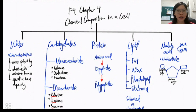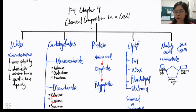Hello everyone, I'm Koyen and today we are going to learn the chemical composition in a cell, which is from Chapter 4.